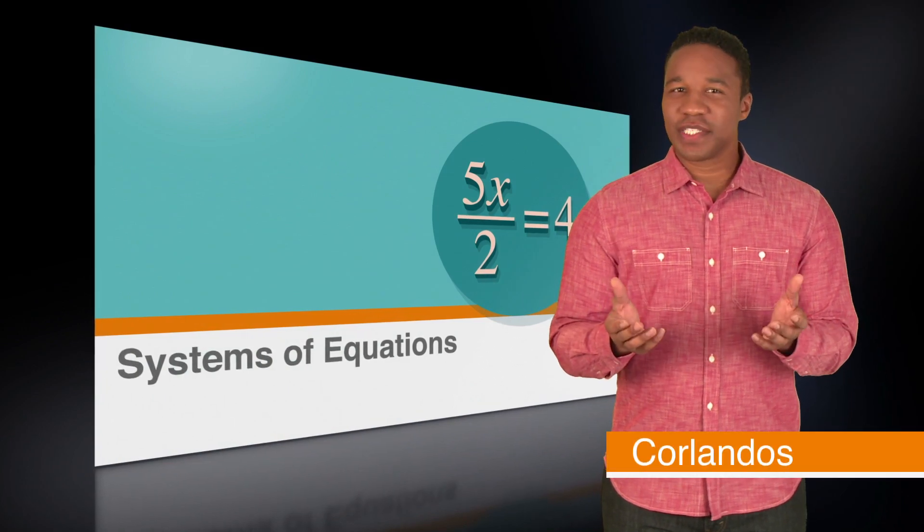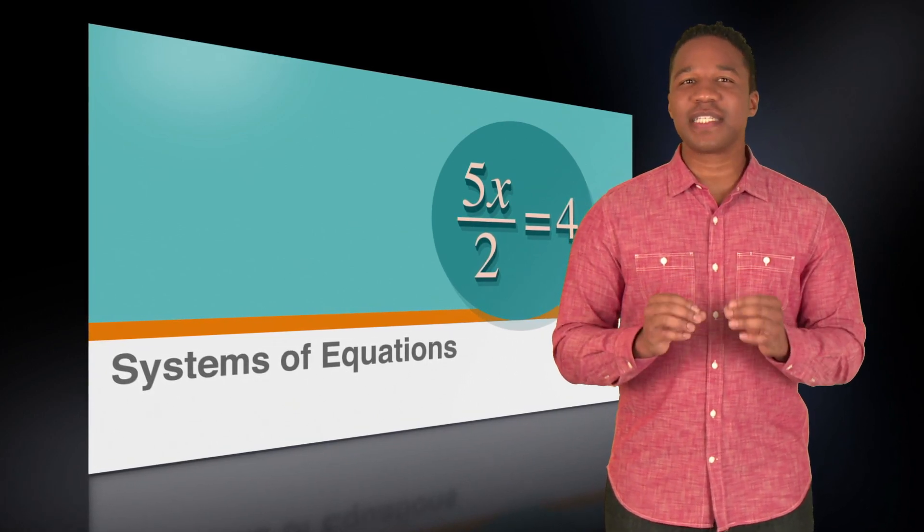Just like you can use one equation to solve for a single variable, you can use two equations to solve for two variables, three for three variables, and so on. These are called systems of equations. Simply put, systems of equations are groups of equations used to solve for more than one variable.